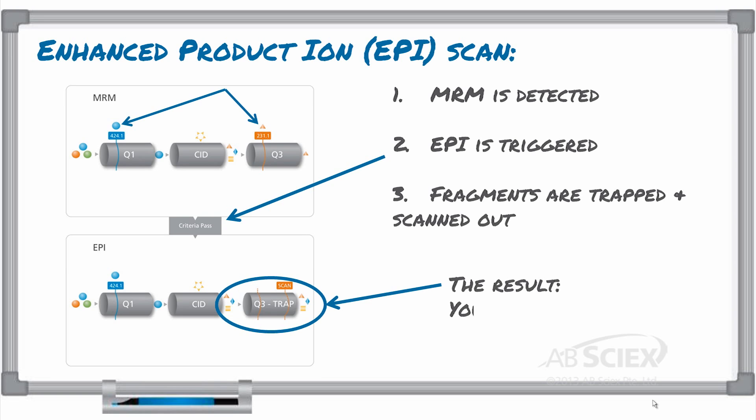The result? Rather than just detecting your single MRM, you are able to see multiple fragments, even four or more MRMs, just by triggering on one of them.